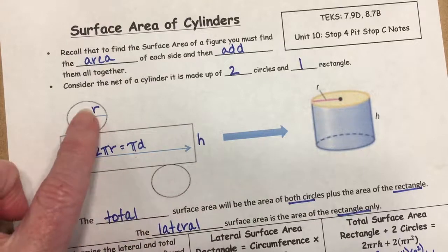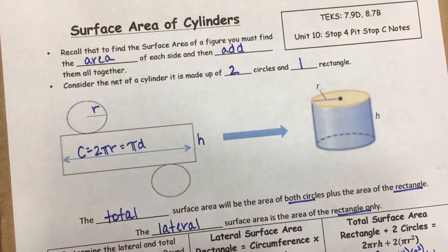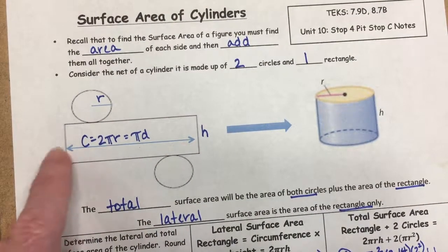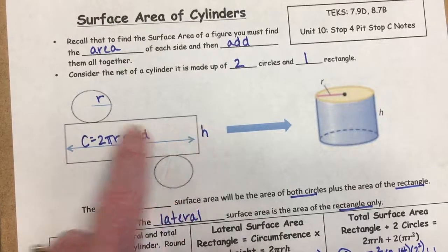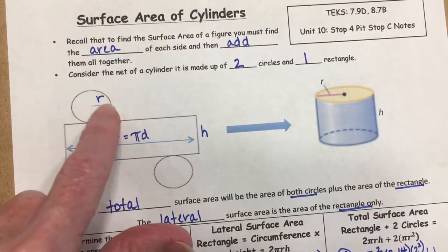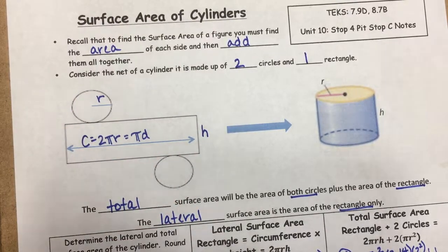That covers surface area of cylinders. Remember: you have two circles on top and bottom, and a rectangle around the cylinder. The key is that the length of that rectangle equals the circumference of the circle.